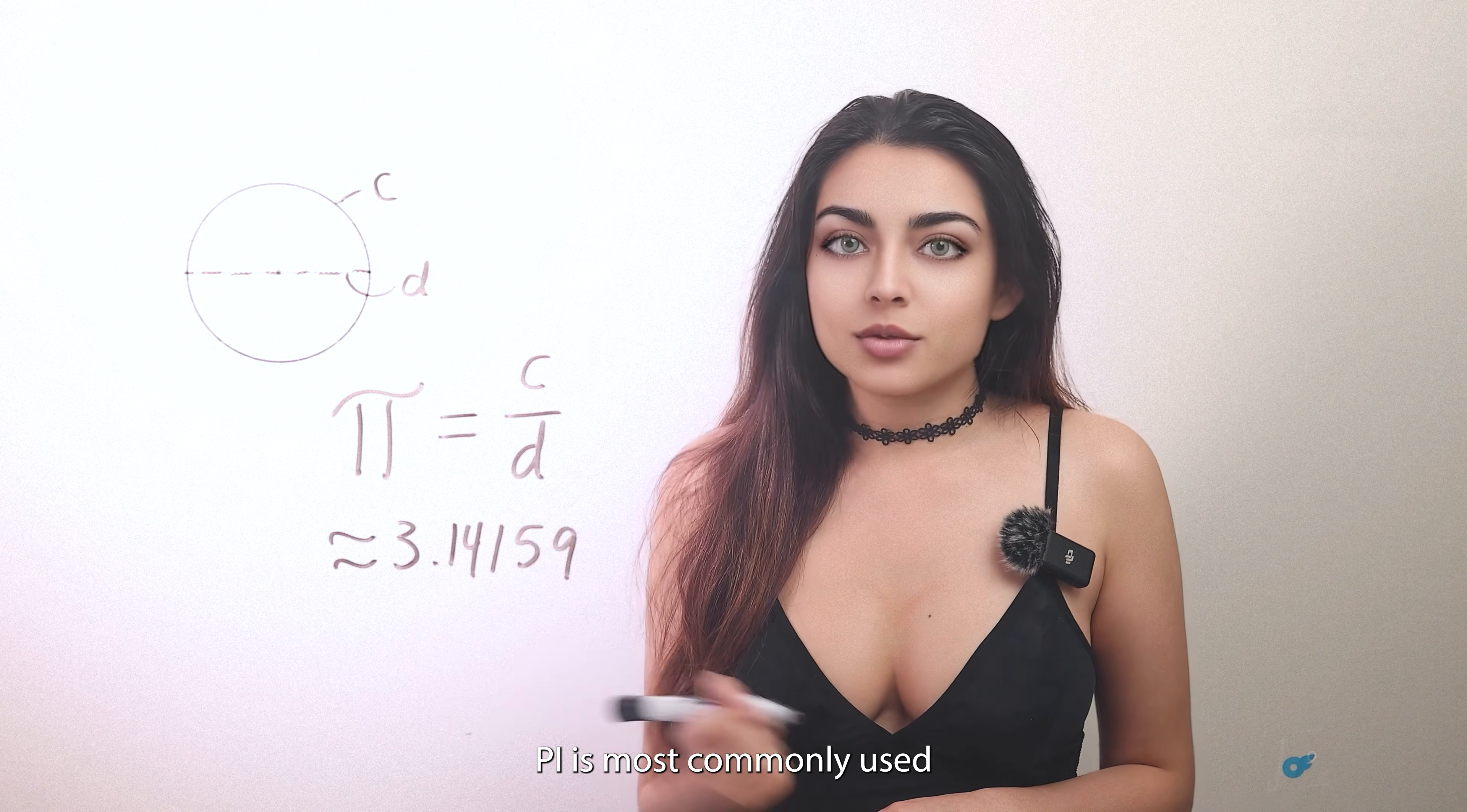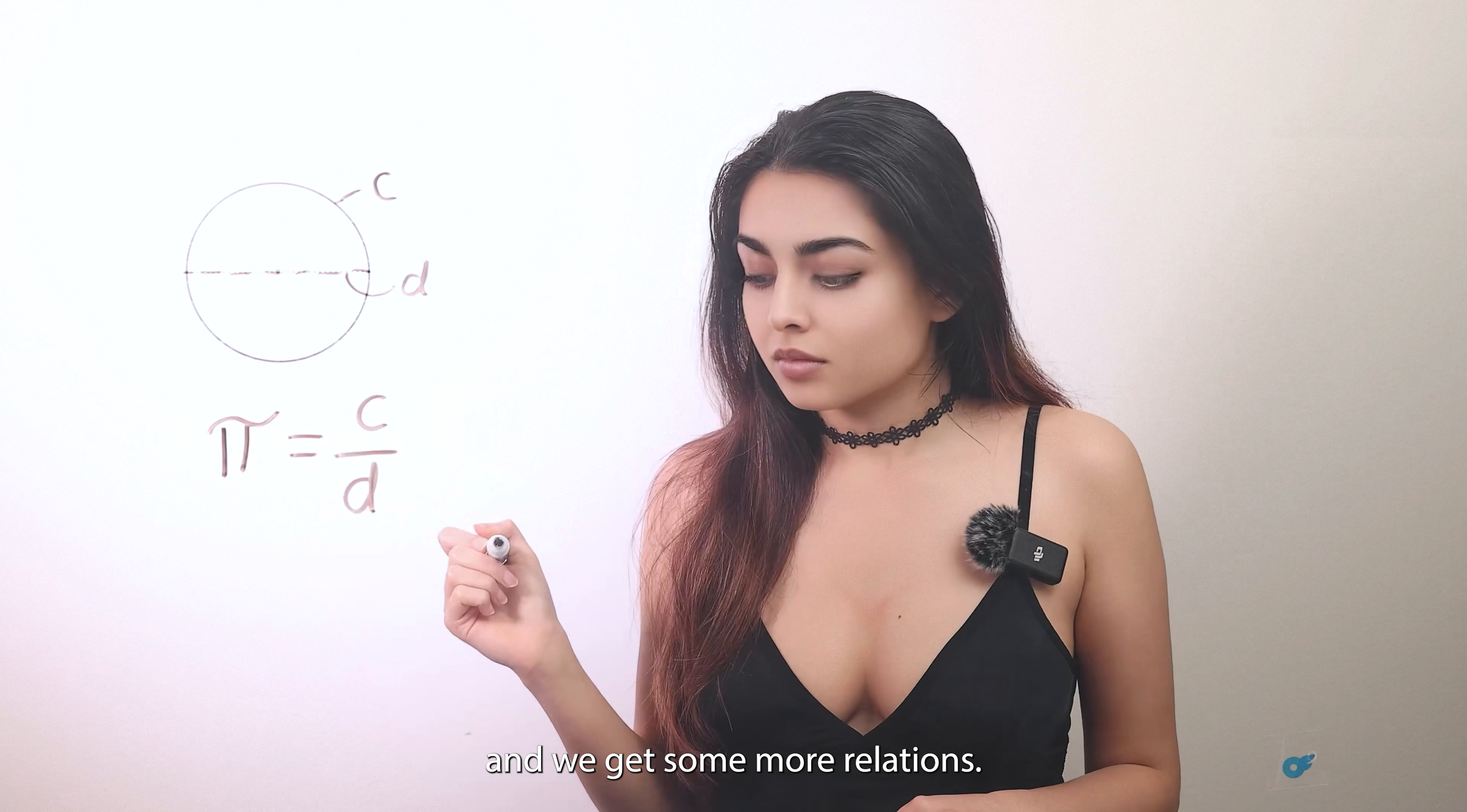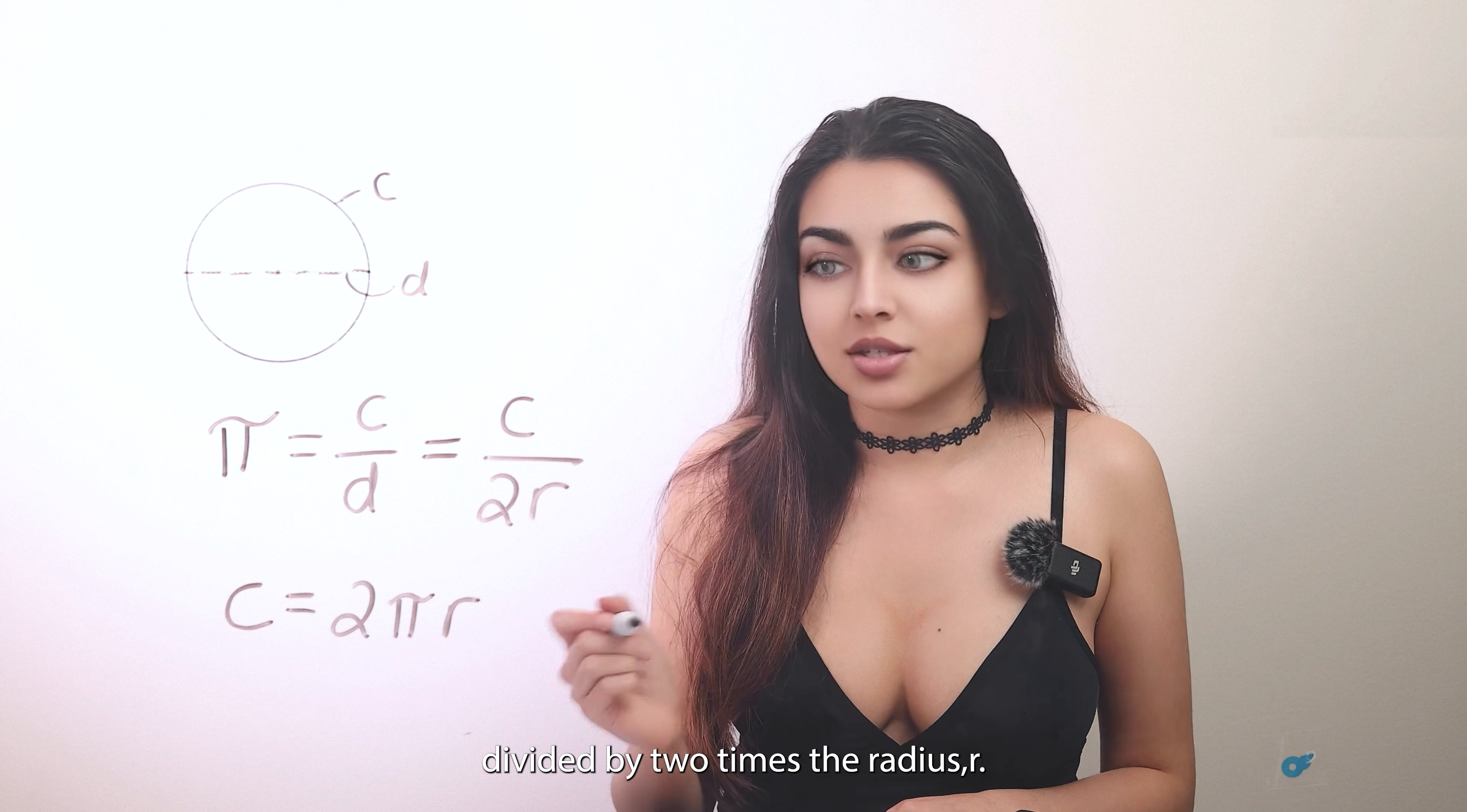Pi is most commonly used in certain computations regarding circles. We can manipulate this formula a bit and we get some more relations. We know that the diameter is 2 times the radius, so pi also equals the circumference C divided by 2 times the radius r.